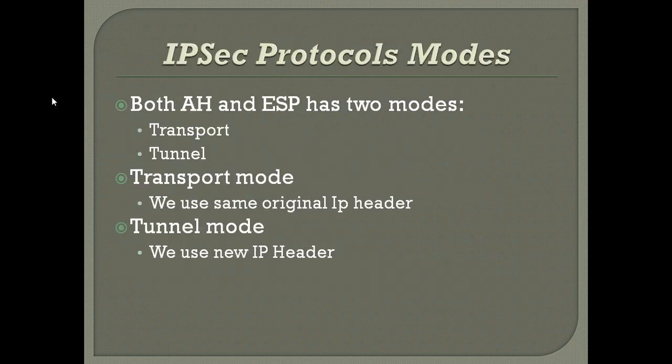There are two main modes for each of the protocols — both AH and ESP support Transport Mode and Tunnel Mode. In Transport Mode, the original IP header is kept and moved on to the peer end unchanged. In Tunnel Mode, a new IP header is generated and the data is transformed.